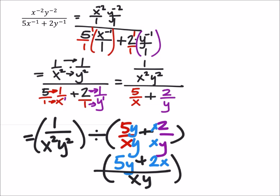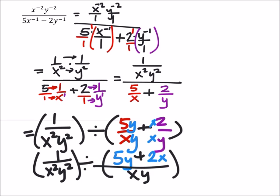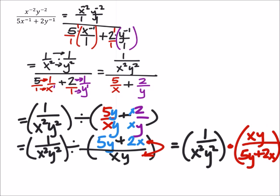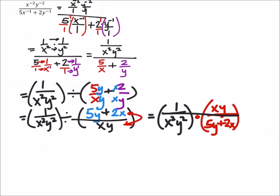Now we have one full fraction that we can reciprocate to change this to multiplication. I reciprocate that fraction and change the operation to multiplication. Now we're in good shape — we can combine these two by multiplying numerators and denominators, making this one full fraction. This equals one times xy over x squared y squared times the quantity five y plus two x.